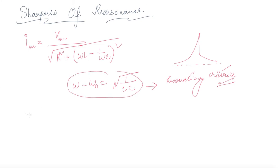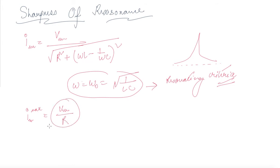We know I_max equals Vm upon R when the reactive term becomes zero — that is my resonance condition. For values of omega other than omega_naught, the amplitude of the current is less than the maximum value.